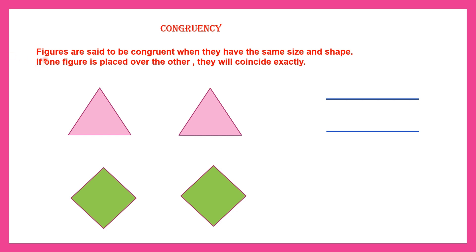Figures are said to be congruent when they have the same size and shape, and if one figure is placed over the other, they will coincide exactly. So they should have the same size and shape, and when they are placed one on top of the other, they must coincide exactly.